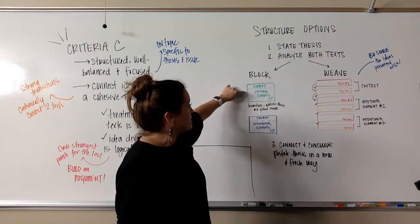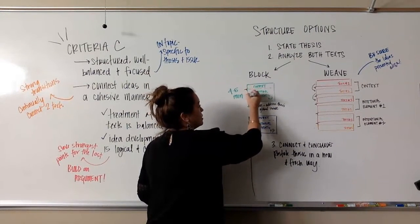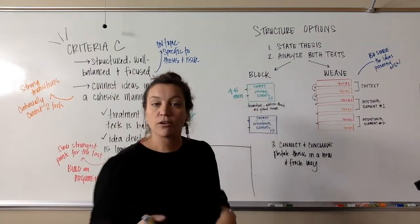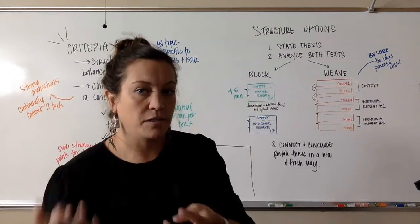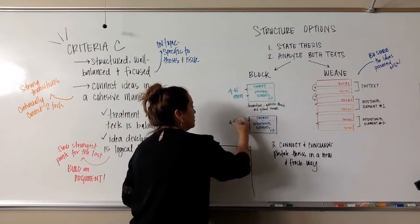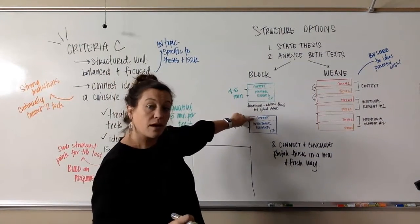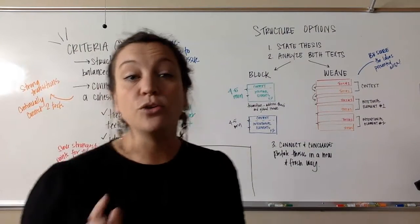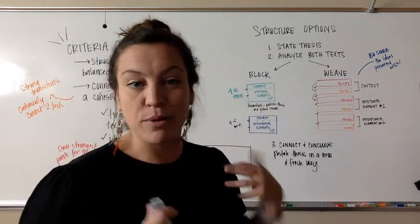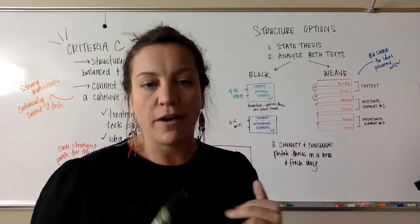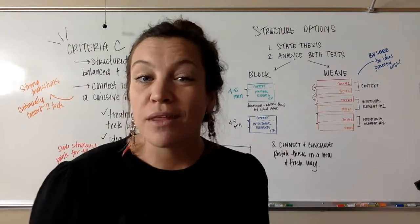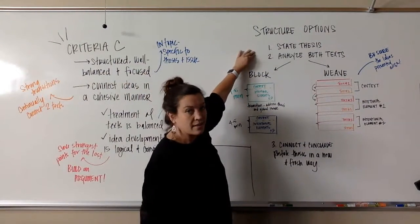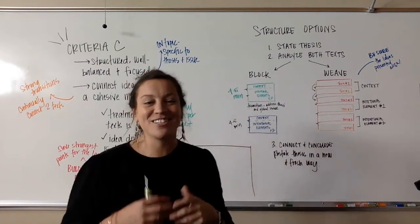Then I transition — using phrases like 'comparingly' or 'conversely, this other author addresses the issue of loneliness and here's how they do it slightly differently' — and spend another four to five minutes on my second text, covering its context and two intentional elements. The third thing is to connect and conclude: restate your thesis in a new and fresh way. Don't simply repeat your first sentence — use synonyms and high-level academic words to say the same thing differently. All good analysis and delivery follows: tell them what you're going to tell them, tell them, then tell them what you told them.